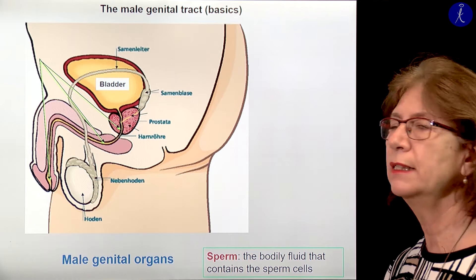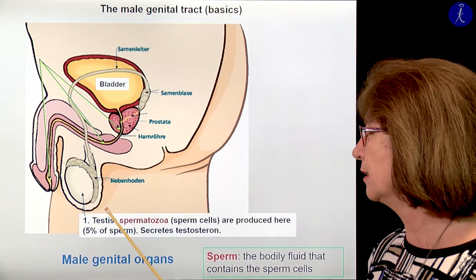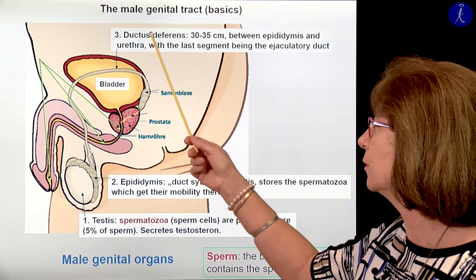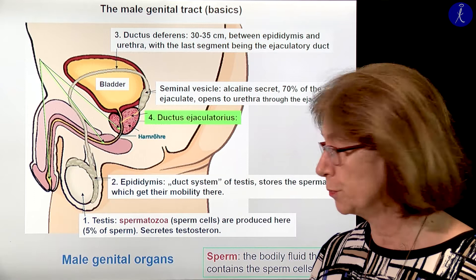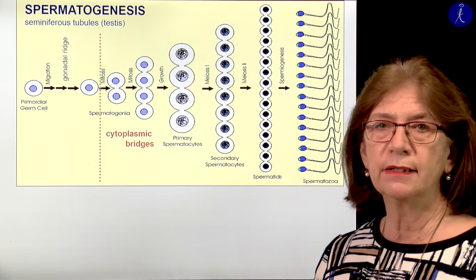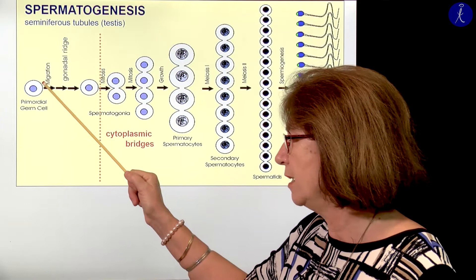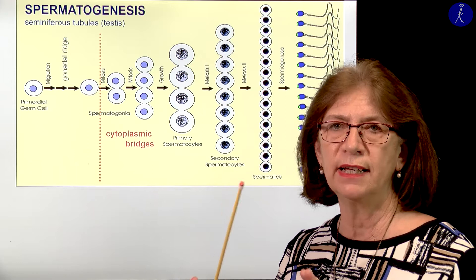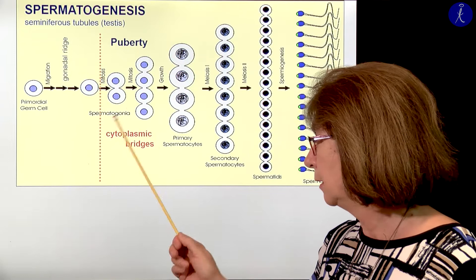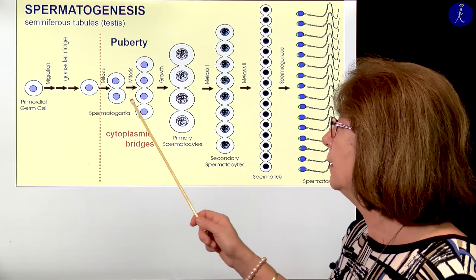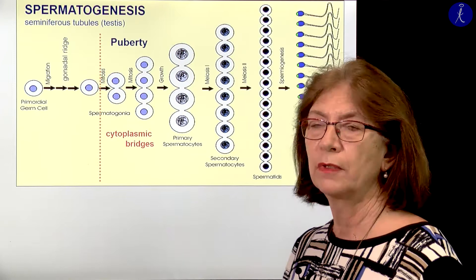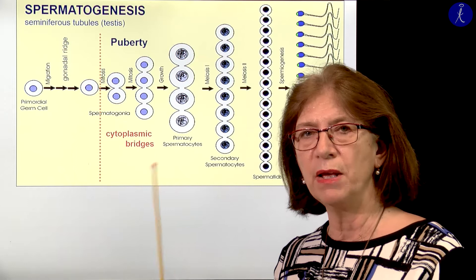Now what about the male part of gametogenesis? The gametes are formed in the testes, then go to the epididymis, from there to the deferent duct, and then the ejaculatory duct connects to the urethra. Now we will talk about the formation of the spermatozoa. The primordial germ cells from the wall of the yolk sack migrate to the genital ridges. They do an initial differentiation, but then remain silent until puberty. At the time of puberty, the canaliculi of the testes get a lumen, and these so-called spermatogonia start mitotic division.